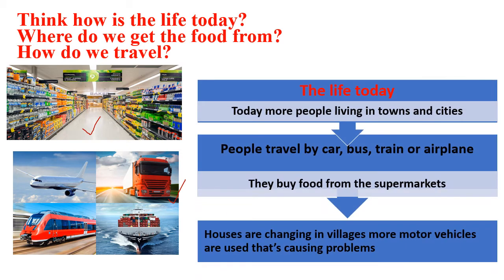The life today: today more people live in towns and cities. People travel by car, bus, train or aeroplane. They buy food from supermarkets. Houses are changing in villages and more motor vehicles are used.